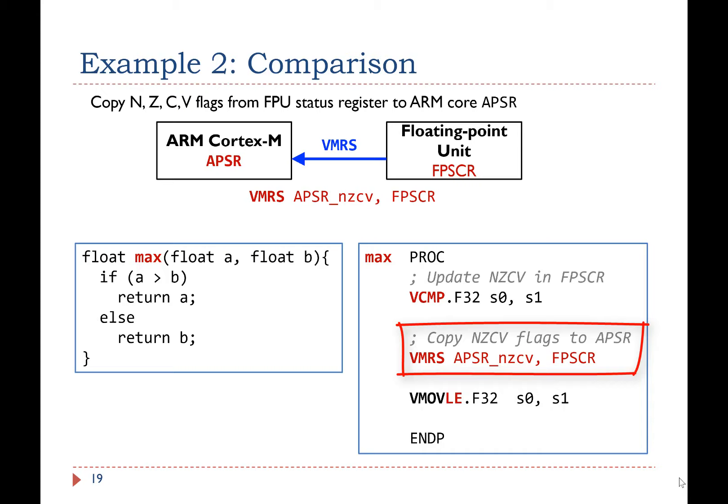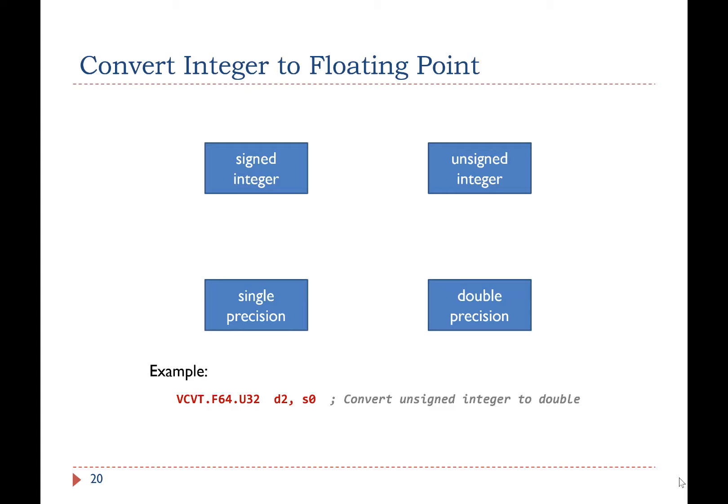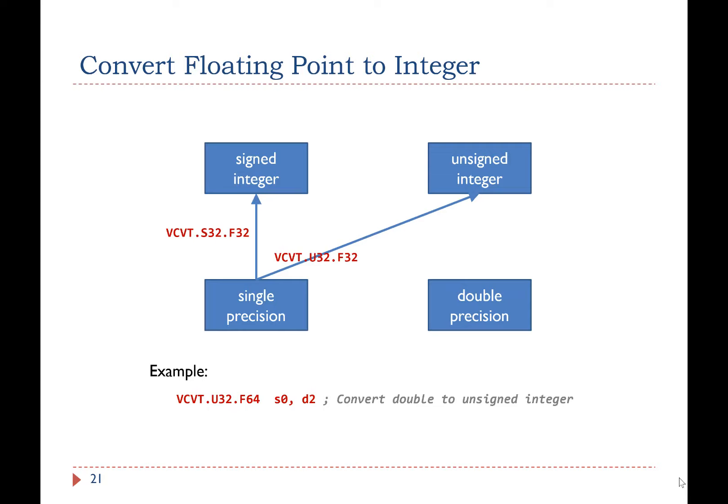FPU also supports fast data conversion between different data types. This diagram shows instructions that convert a 32-bit signed or unsigned integer to a single or double precision floating point number. This diagram shows the conversion in the opposite direction. It converts a float or double to a 32-bit signed or unsigned integer.